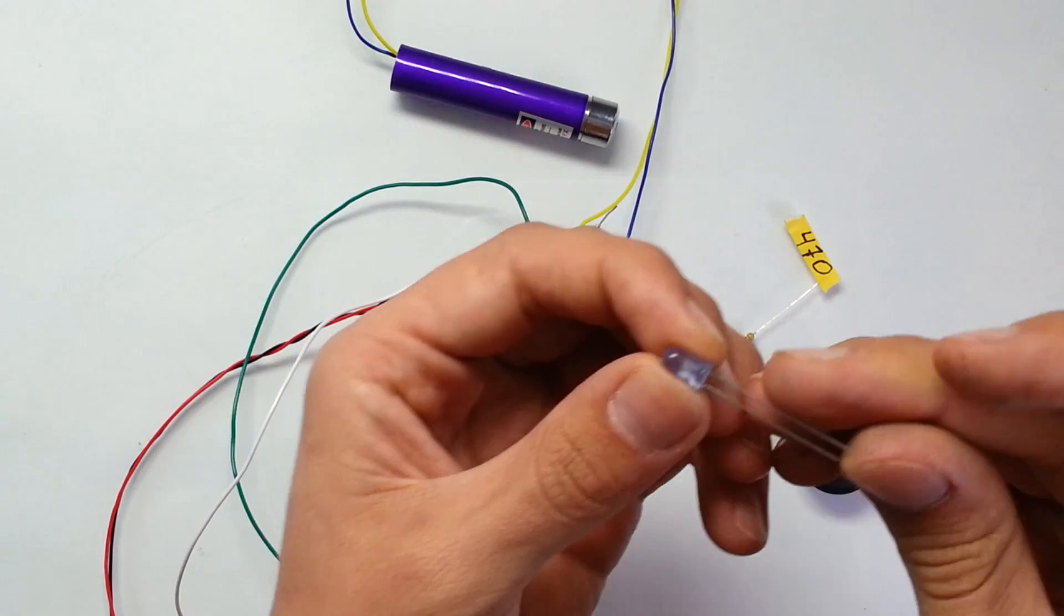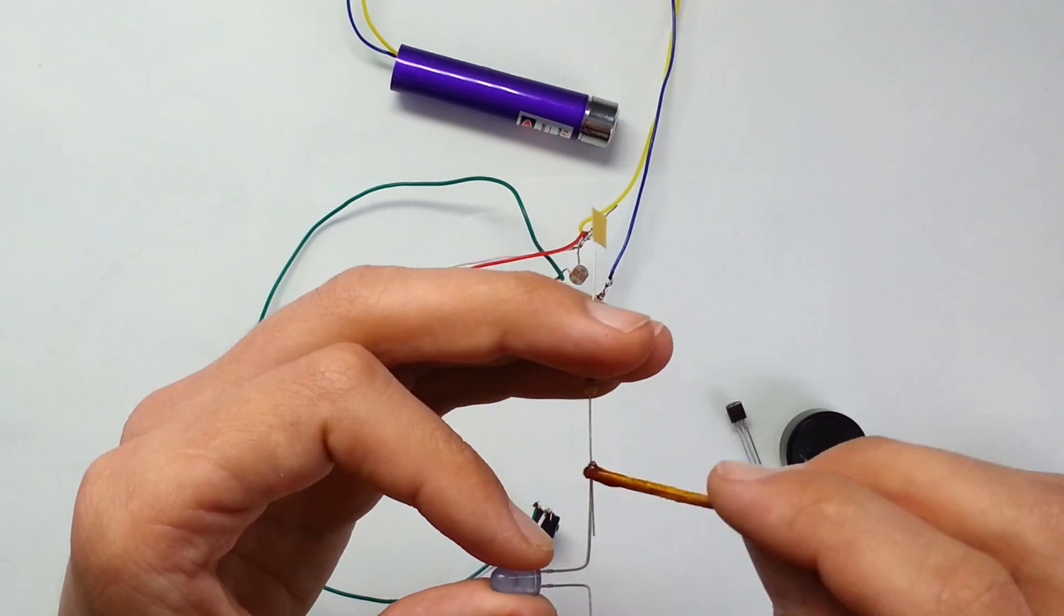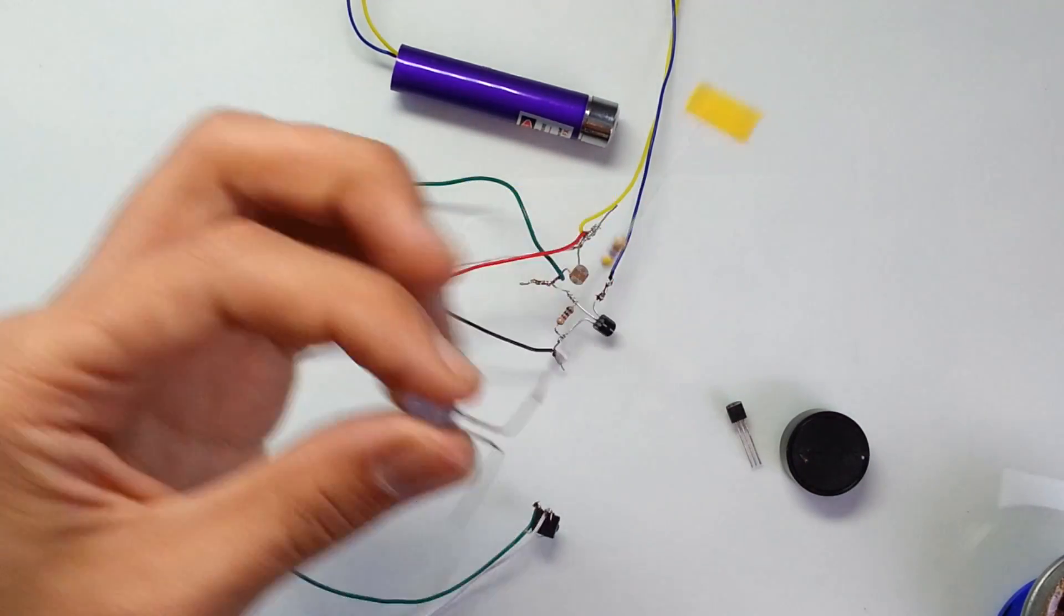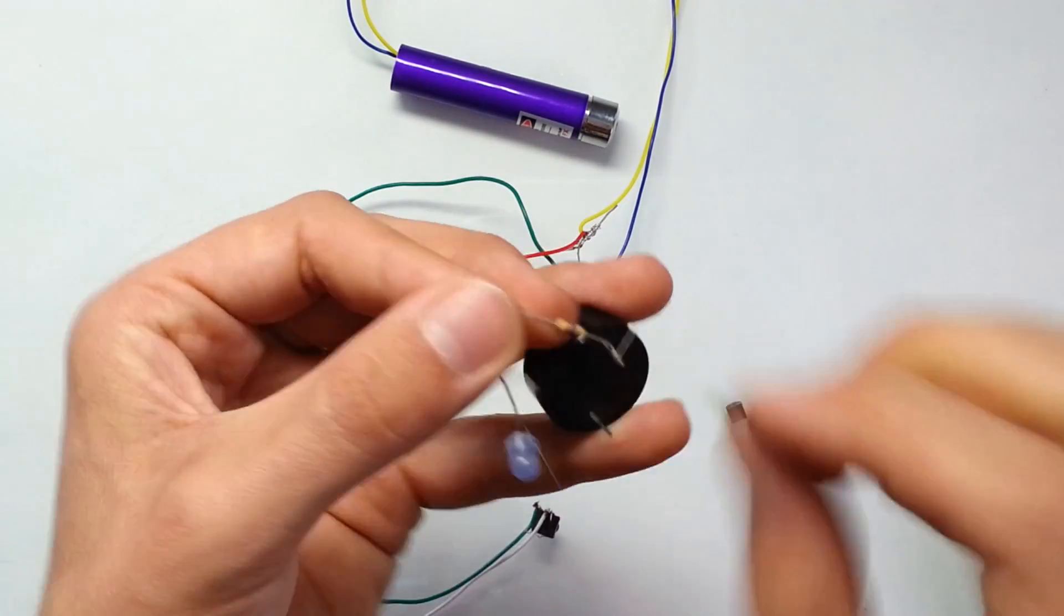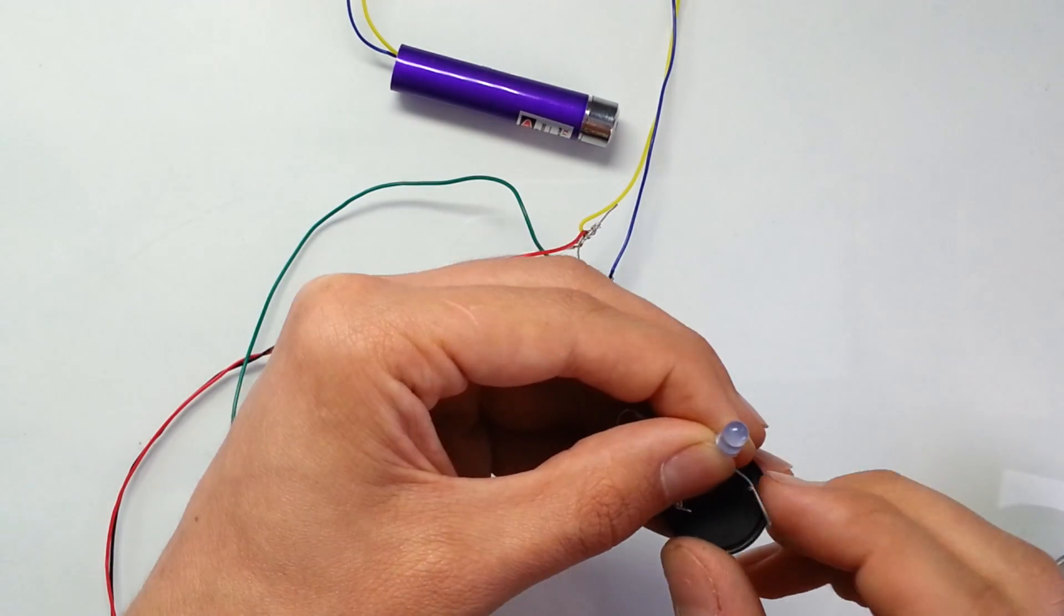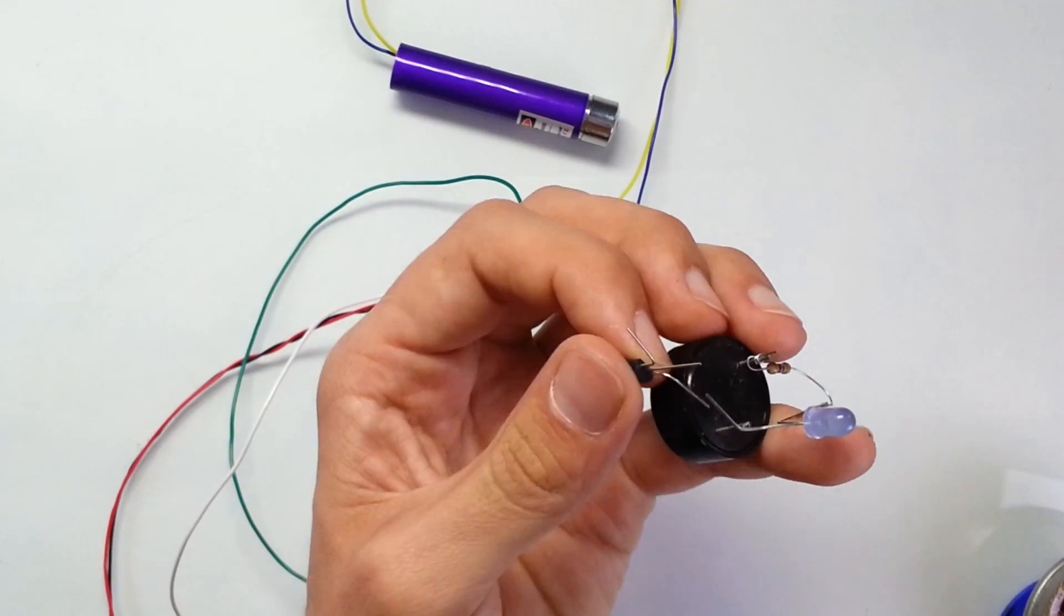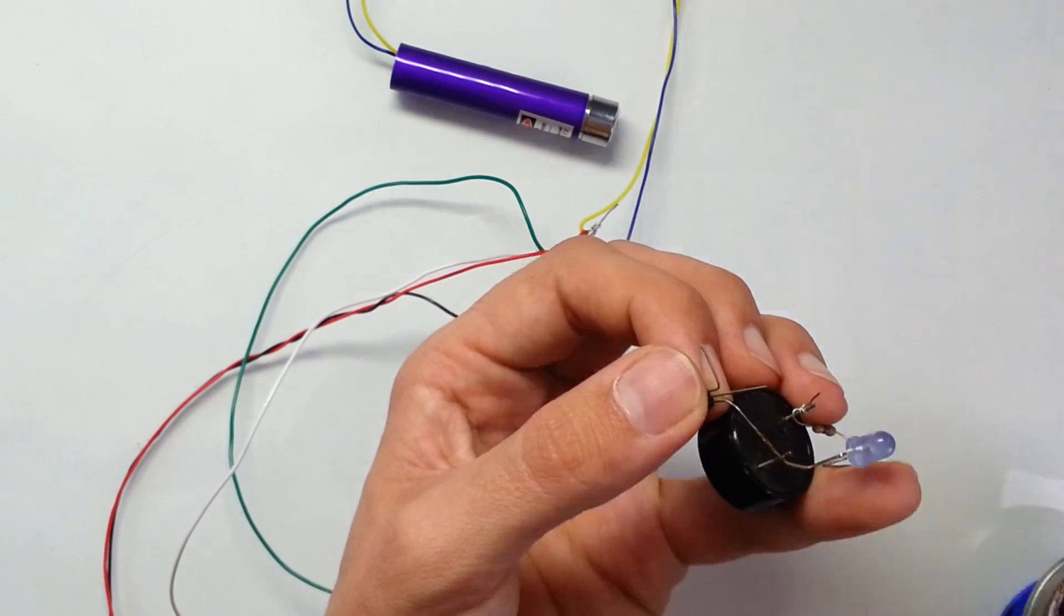First I am going to solder the LED and 470 ohm resistor sequentially. Now let's connect the LED and resistor to the buzzer. Now let's solder the drain lead of the transistor Q2 to the minus lead of the buzzer and to the cathode lead of the LED.